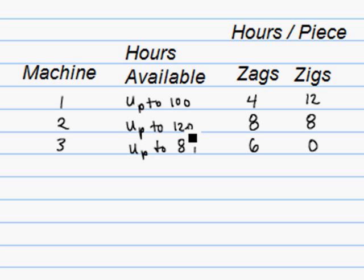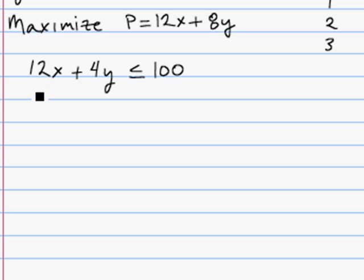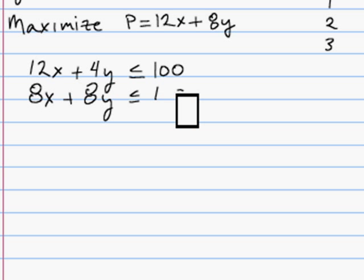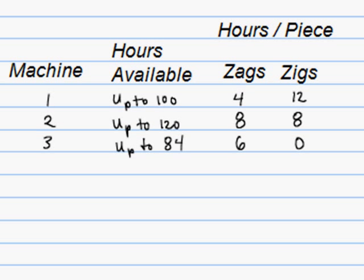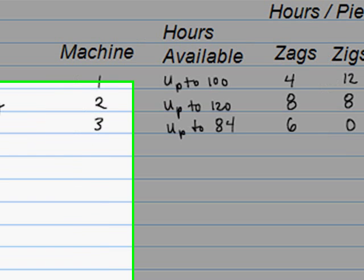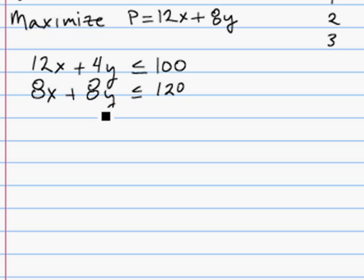The second constraint: we can go up to 120 hours, and it's eight hours for each Zag produced and eight hours for each Zig. So that's 8x plus 8y less than or equal to 120. For machine three, we have six hours per Zag and zero hours per Zig. So that's zero x — meaning that term drops out — plus 6y, which is just 6y less than or equal to 84.